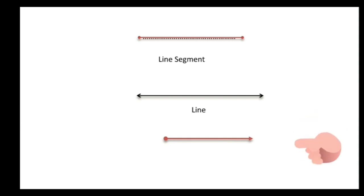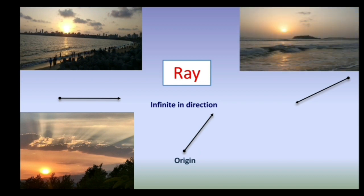In this figure, one point is fixed and one point has an arrow which means it can be extended infinitely. We call such shapes as ray. Now you must be thinking that this particular word 'ray' we have heard before. What exactly is a ray?